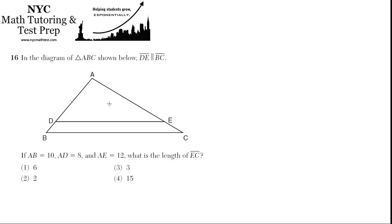In the diagram of triangle ABC shown below, DE is parallel to BC. So what does that mean?